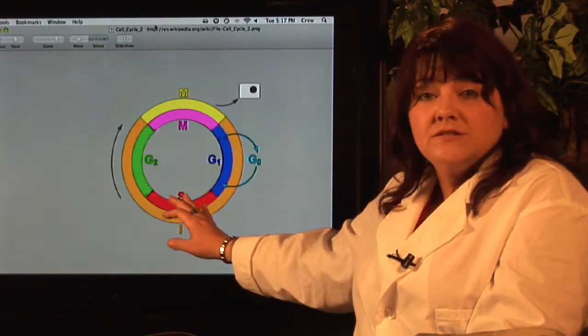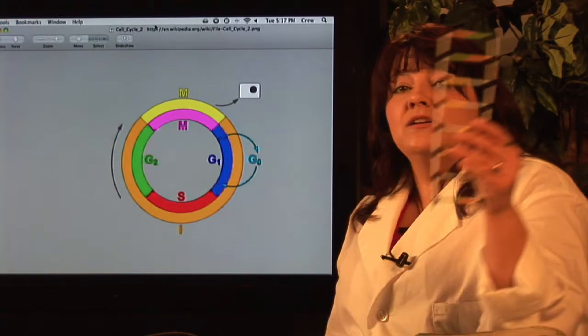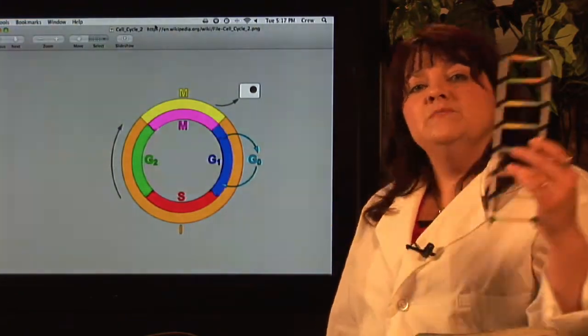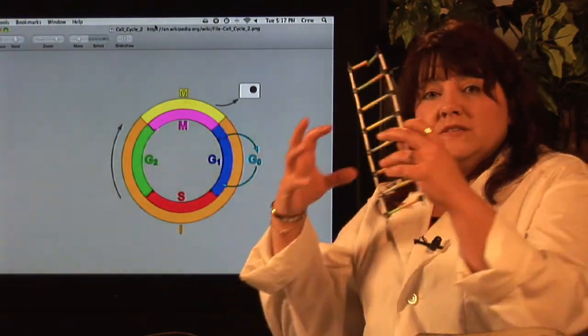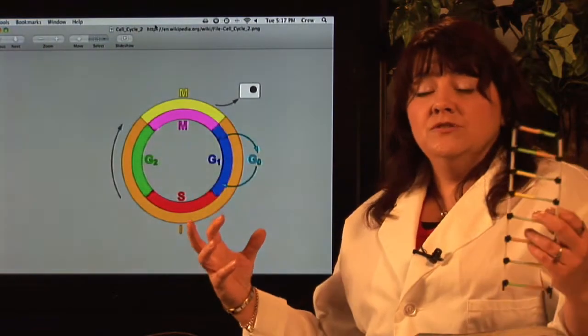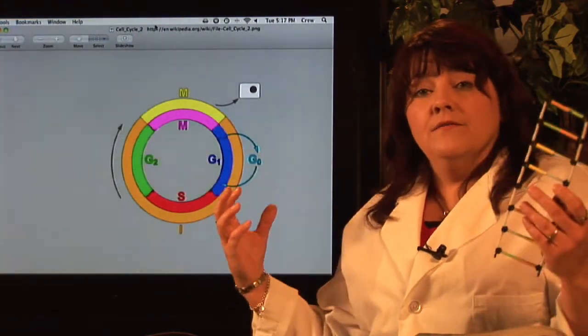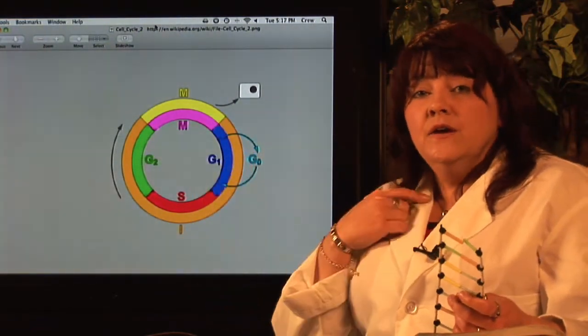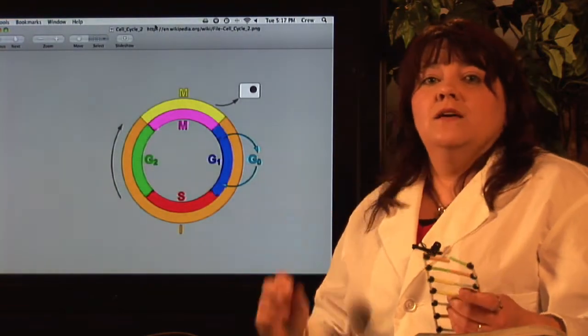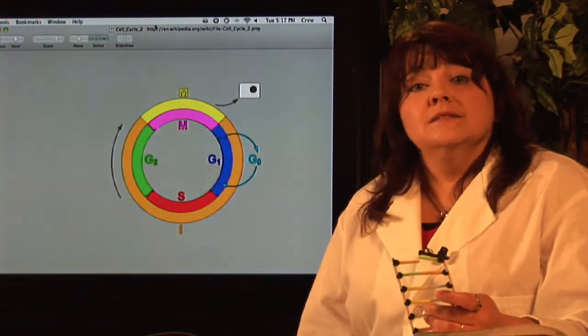This is the phase in the cell cycle where DNA is actually copying itself. It's making exact copies so when the cell splits in half, each new cell has the same amount and kind of DNA. So one hair cell is like another hair cell, one skin cell is like another skin cell.